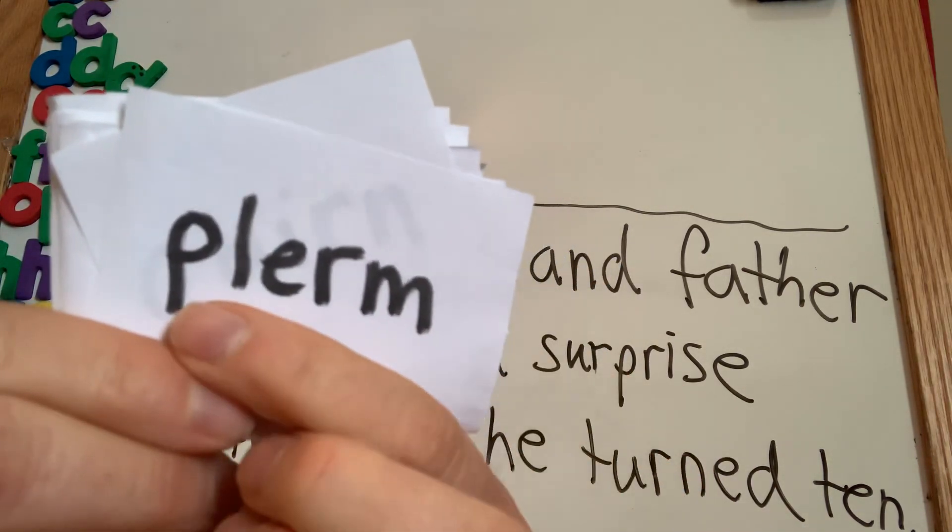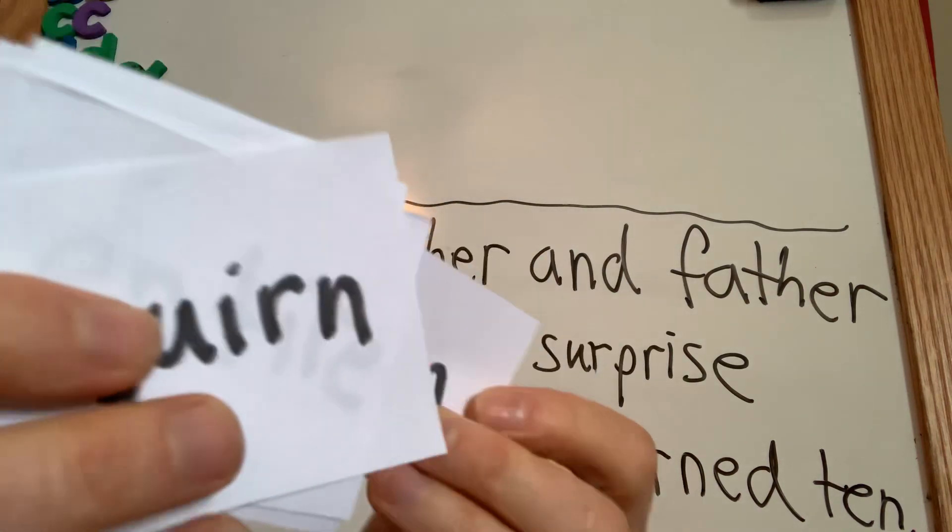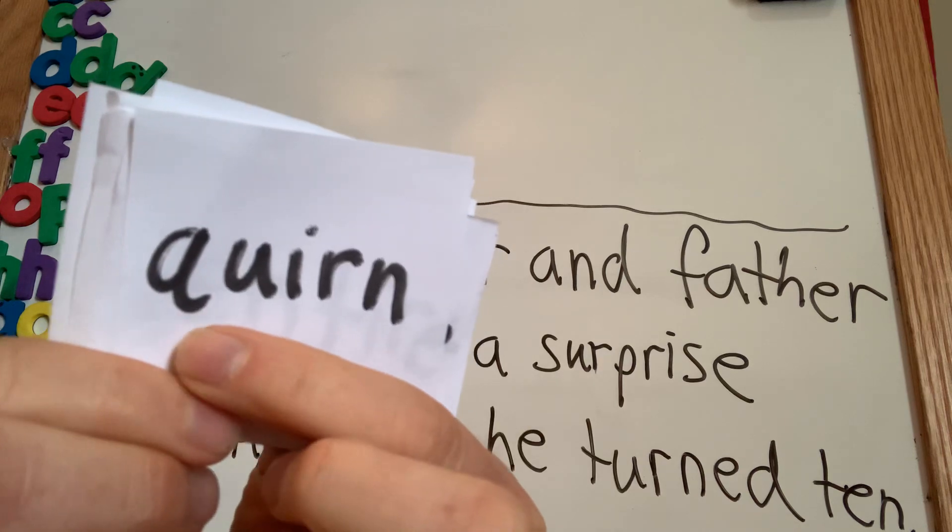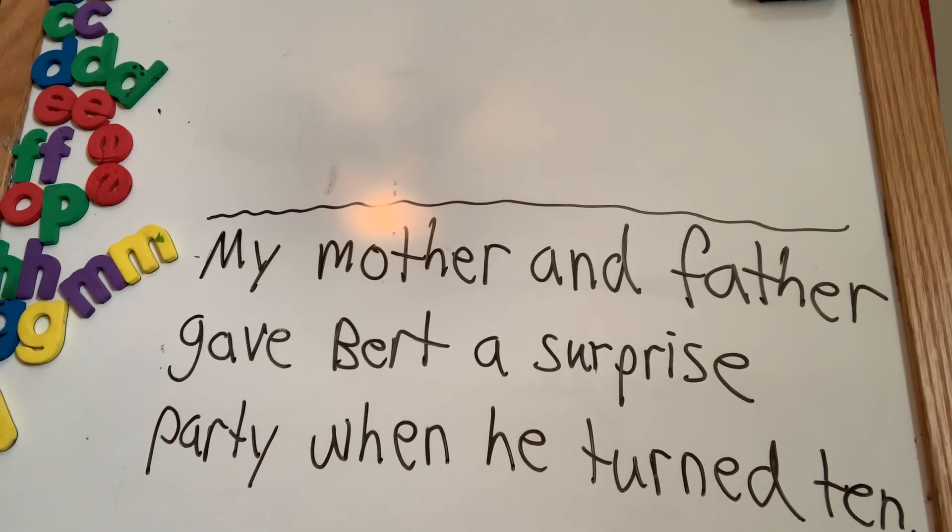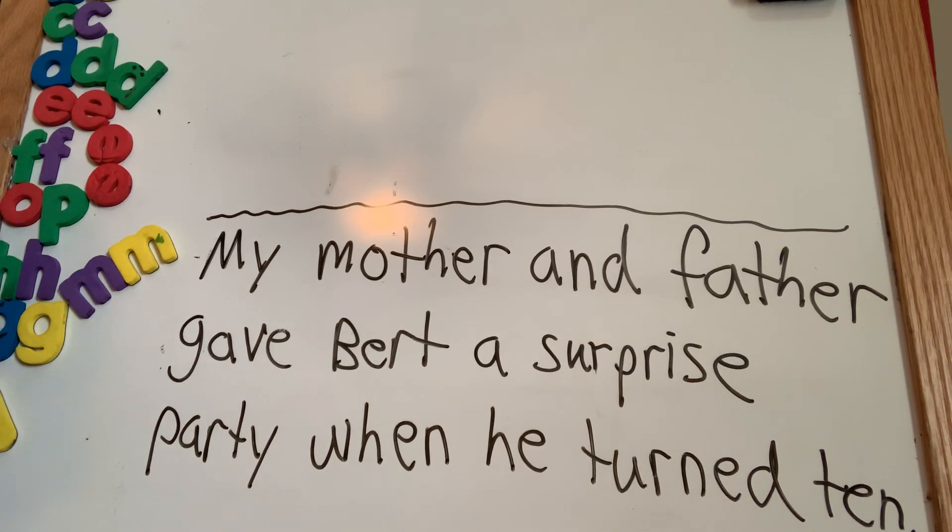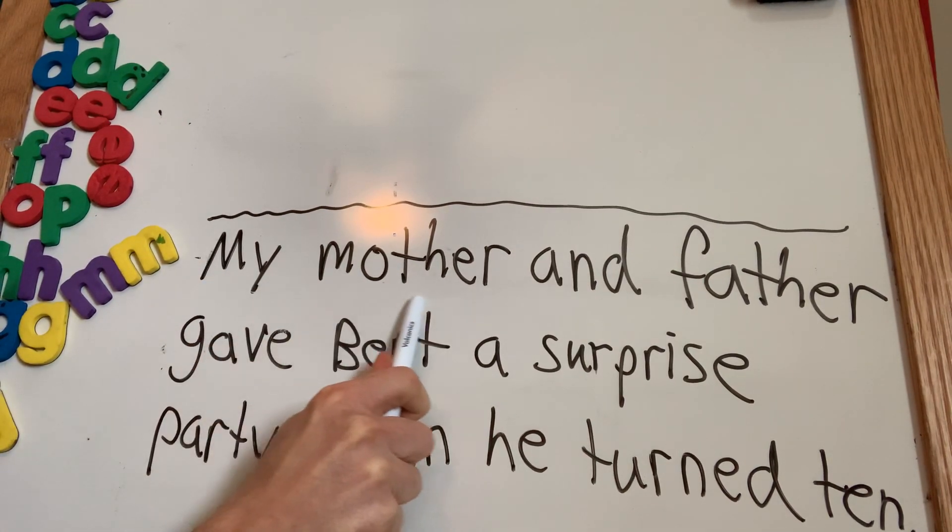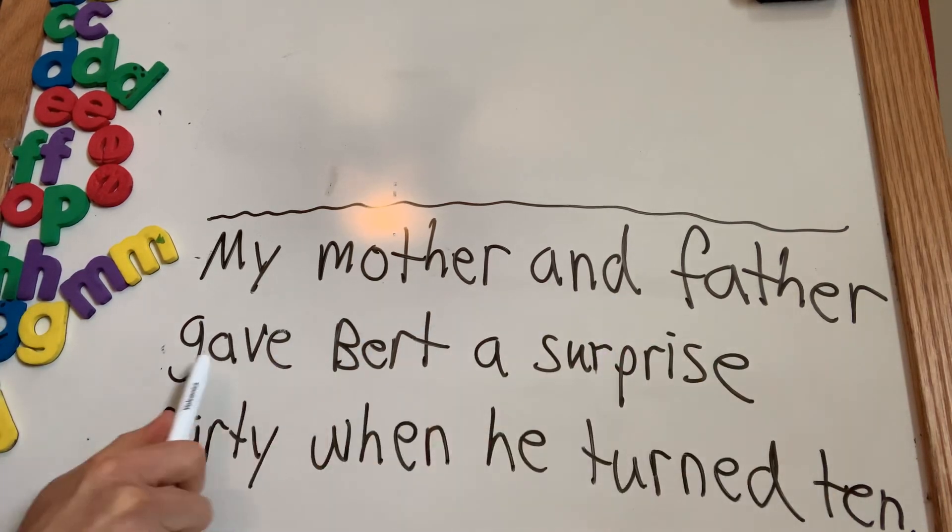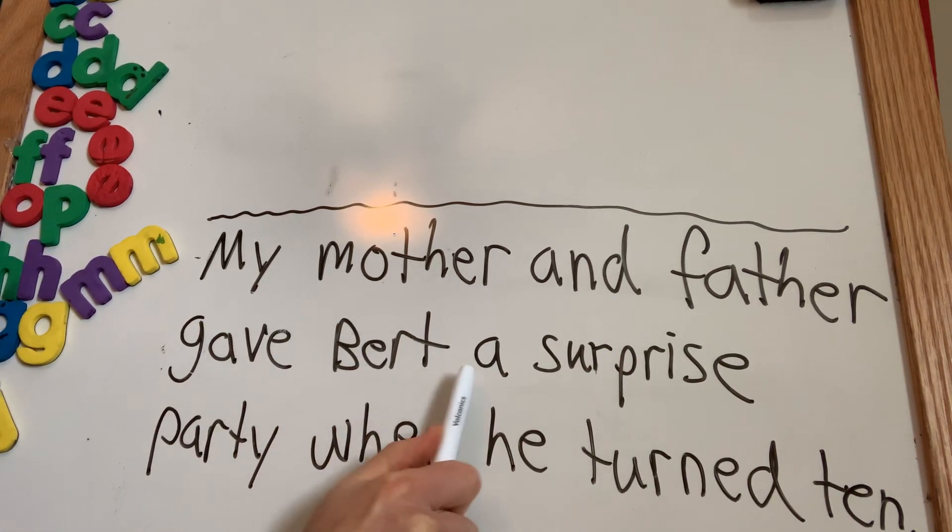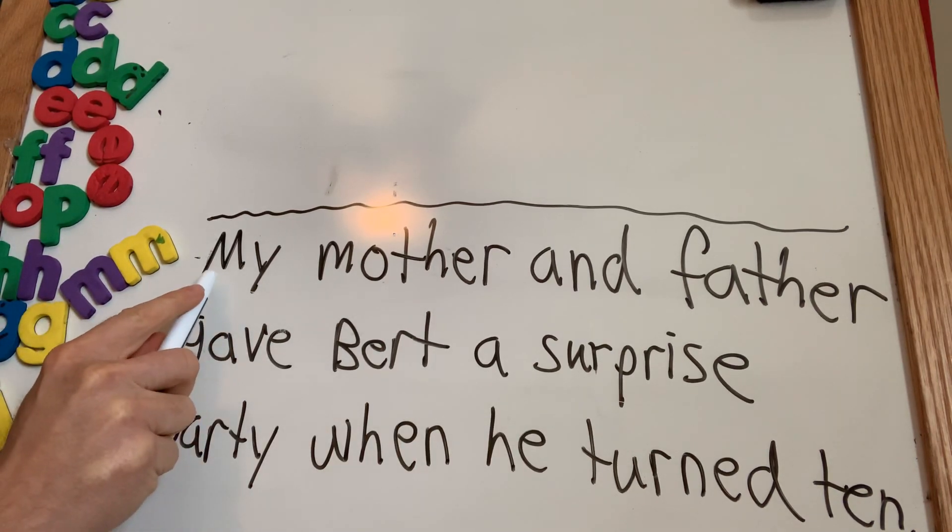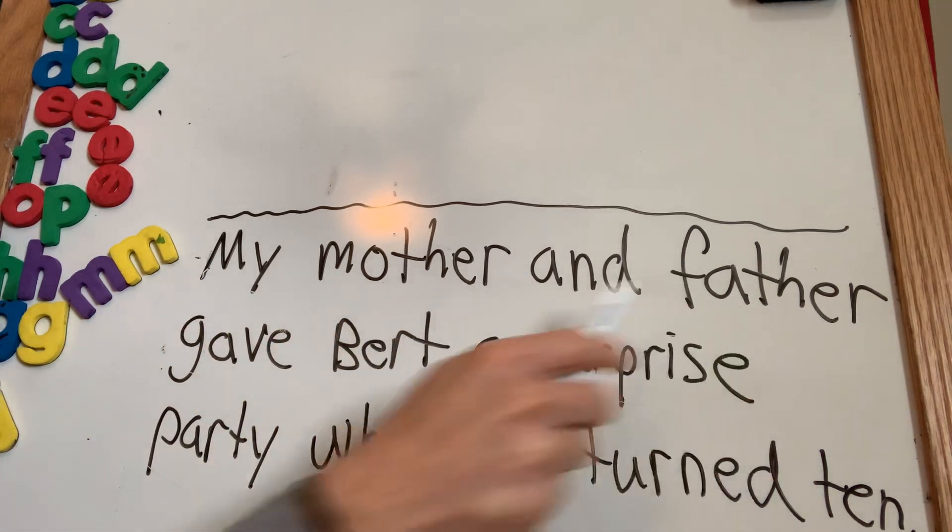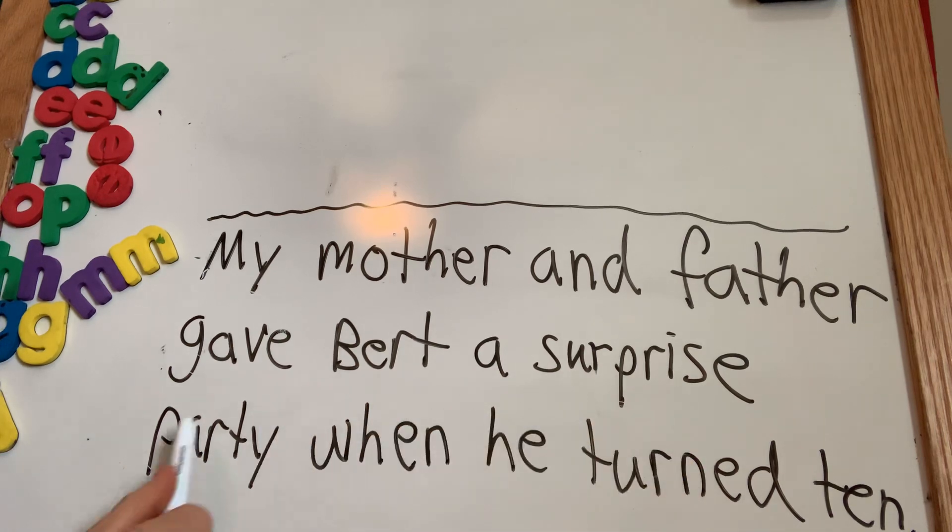Let's do nonsense words. What's the word? Plurm. And quern. Good. Last thing we're going to do before we start some spelling. You can try it on your own. So, we're going to try to read this. See if you can read it with me. Ready? My mother and father gave Bert a surprise party when he turned 10. Now, let's try to read it nice and fluently this time. Ready? My mother and father gave Bert a surprise party when he turned 10. Very good.